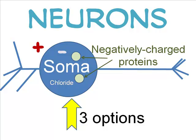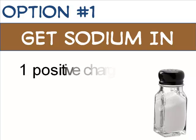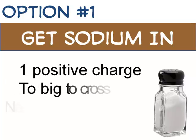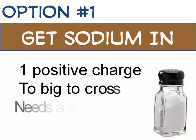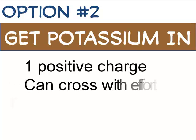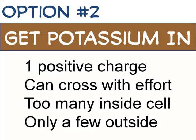Sodium has one positive charge, but it's too big to cross the cell wall easily. If there was a door to go through, sodium could rush in, but it can't easily seep in. The cell membrane is only semi-permeable — not everything can go through it. Potassium has one positive charge, and it crosses the membrane more easily than sodium, but it's still not easy going.